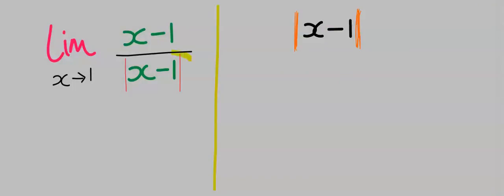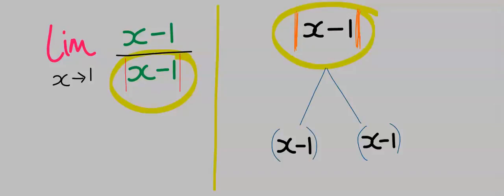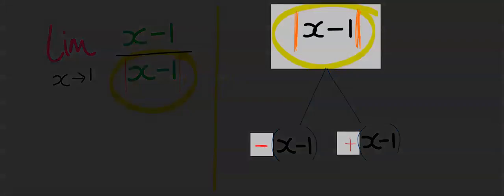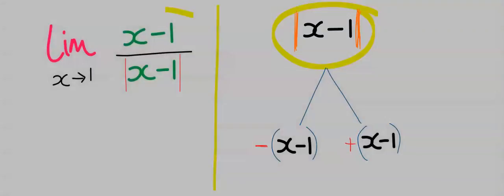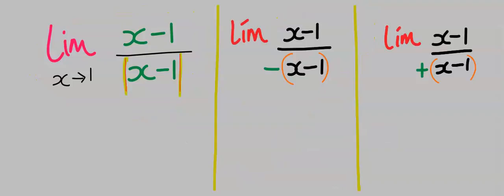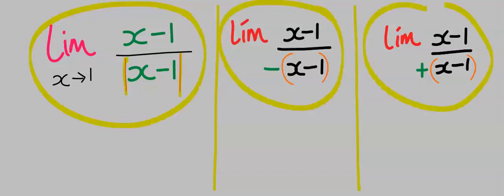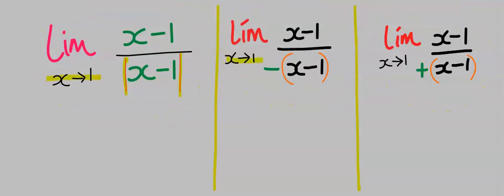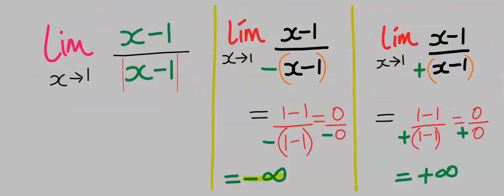With this rule in mind, the denominator will become: one case gives a minus, and the other gives a plus. With this basic rule, this limit will be split into 2. One of them, we take the negative form, and the other, we take the positive form. Hence, because of the presence of this absolute value, this entire question will be split into 2, as x tends to 1. Solving this, we are going to get negative infinity and positive infinity.